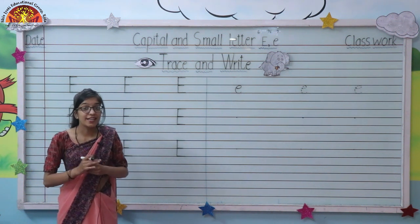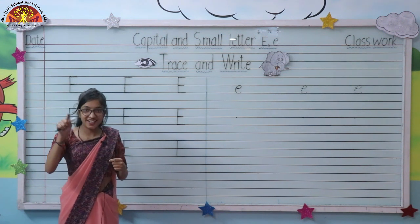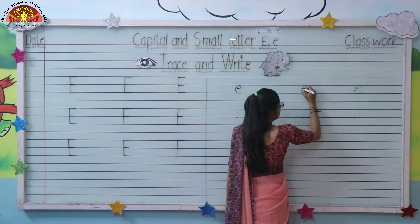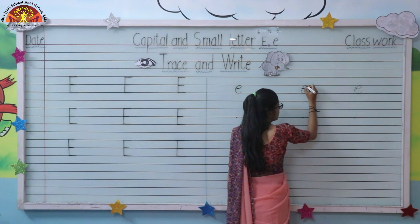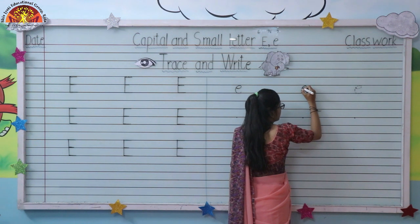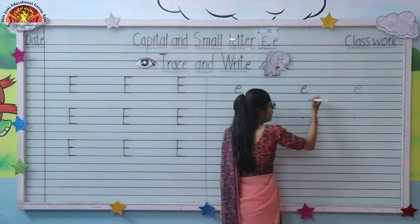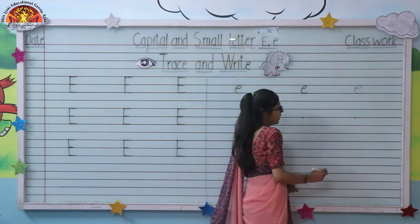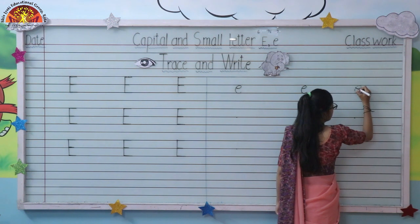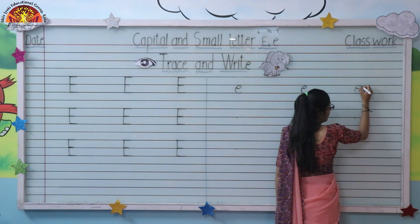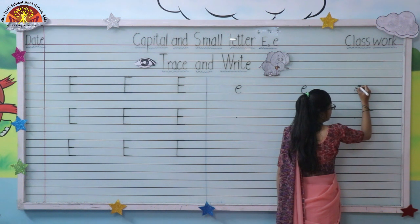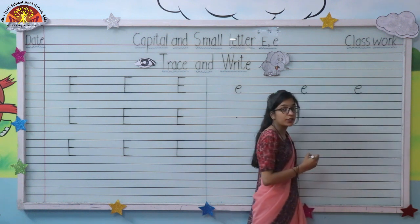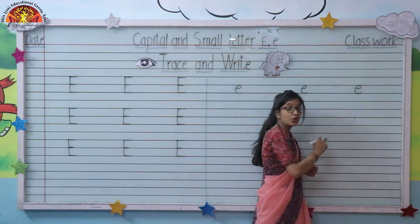Now we will trace small letter E. So look here everyone — we have to start from here. Make a small curve, turn, touch the first line, make one curve, touch the second line and up. Small letter E. Again: start from here, loop or curve, touch first line, small curve, touch second line, up. You have to draw this letter in between these two lines only.